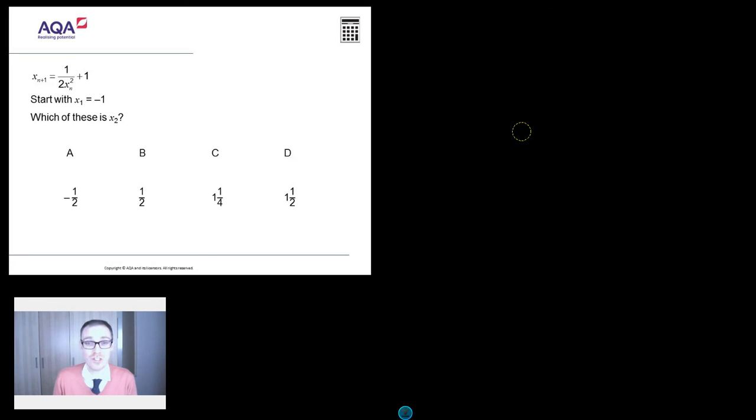And this question is all about the topic of iteration. Now, how on earth do you know it's a question about iteration? Well, you know because you start to notice these funny little symbols. And I want to just talk briefly about these before we crack on. Of course, what the flipping heck does this mean? X and a little n plus 1. There we go.